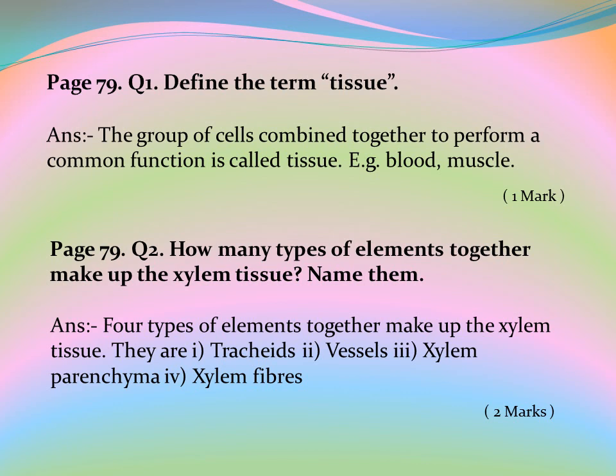Page 79, Question 1: Define the term tissue. Answer: The group of cells combined together to perform a common function is called a tissue. Examples: blood, muscle.